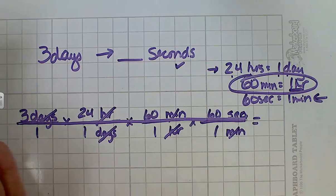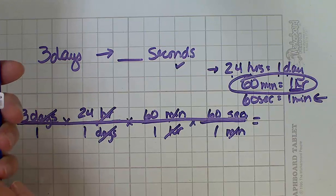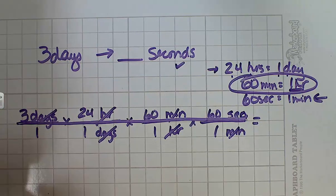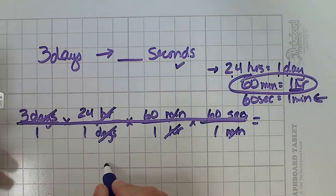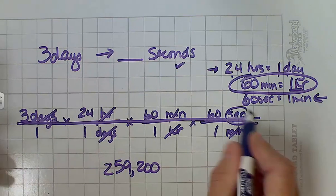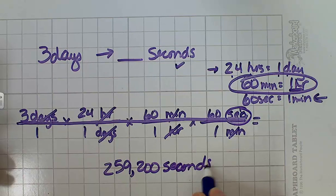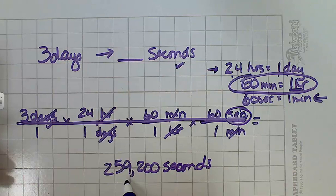So let's go ahead and work this out. We have 3 times 24 times 60 times 60, and that gives us 259,200, and that's a comma. What's my units? It's seconds. So in 3 days there are 259,200 seconds. You can put that in scientific notation if your teacher requests it.